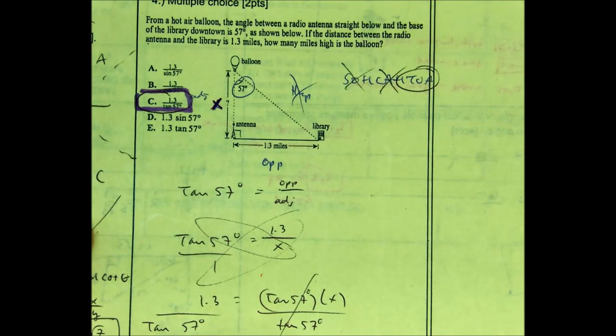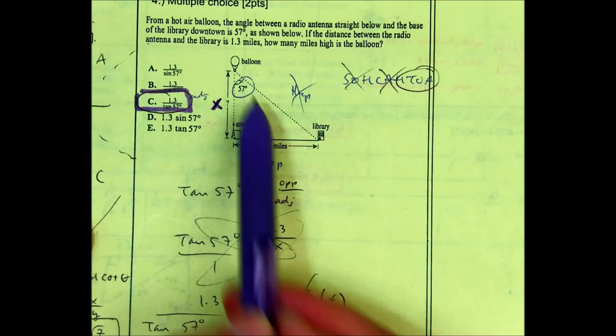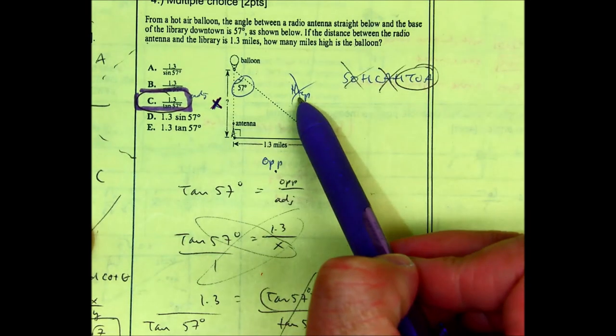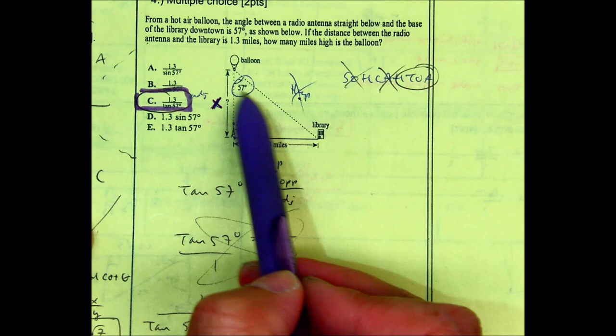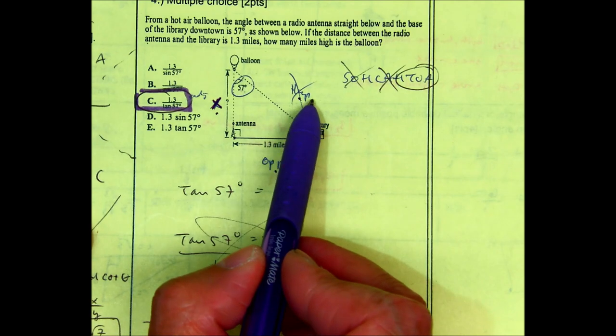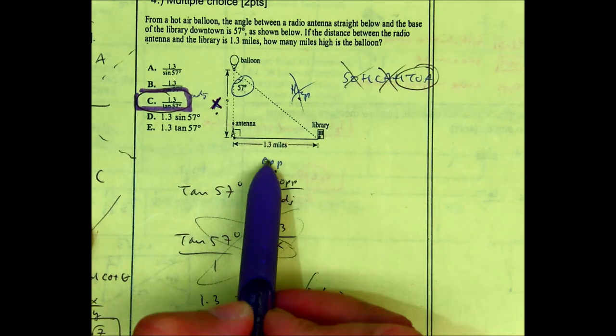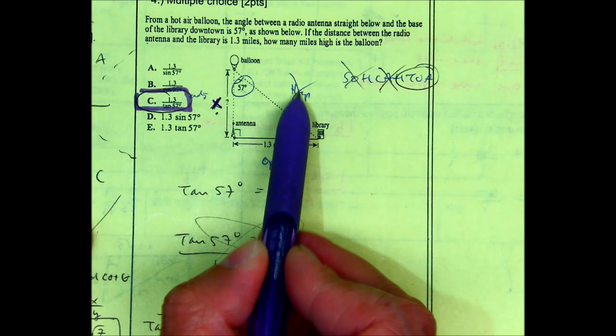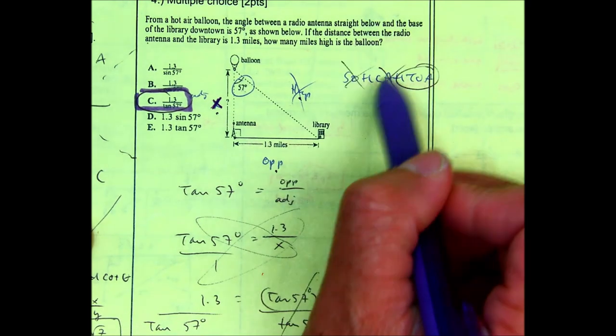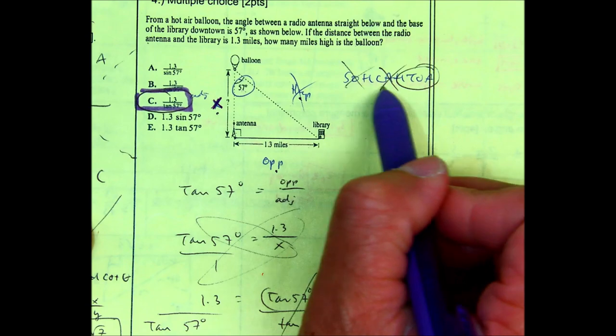If you label all of your sides from the given angle, you have the opposite. Across the right angle, you have the hypotenuse. And then the last side is the adjacent. Notice how that hypotenuse has nothing next to it. There's no variable or numbers. So, I'm crossing off the hypotenuse. If I cross off all the other two trig functions that have the hypotenuse, you're left with tangent.